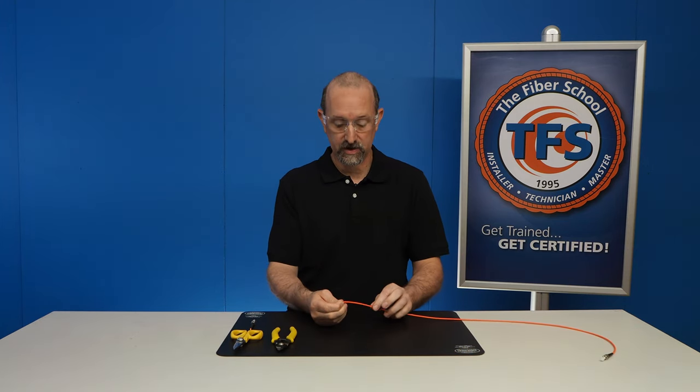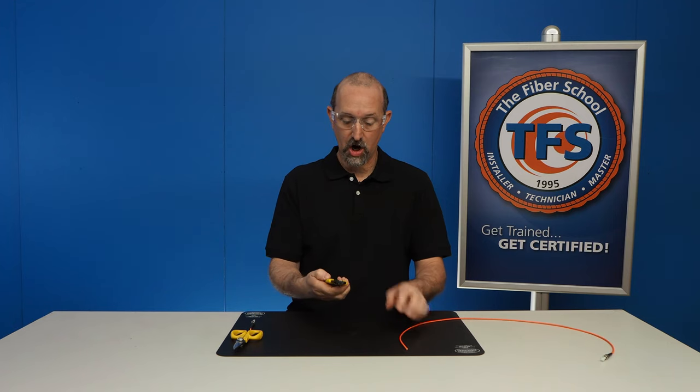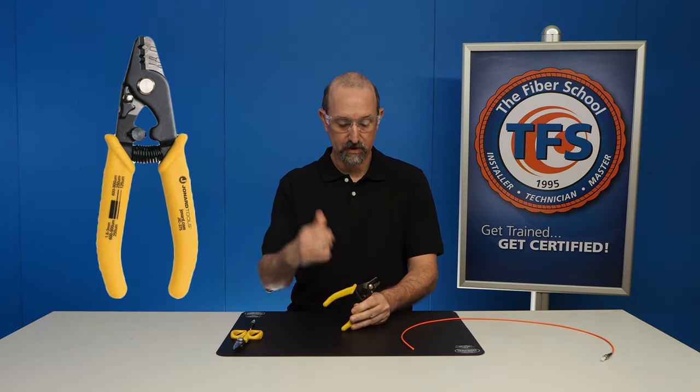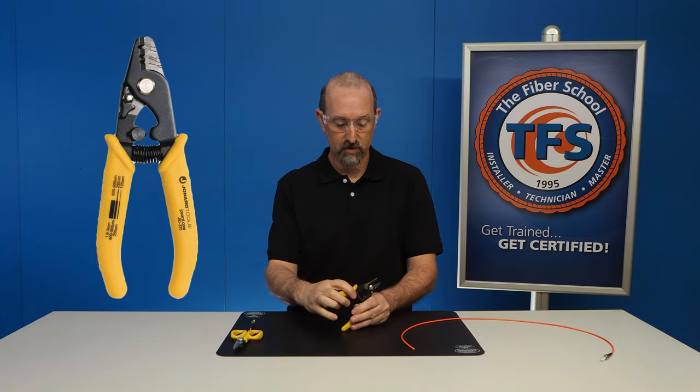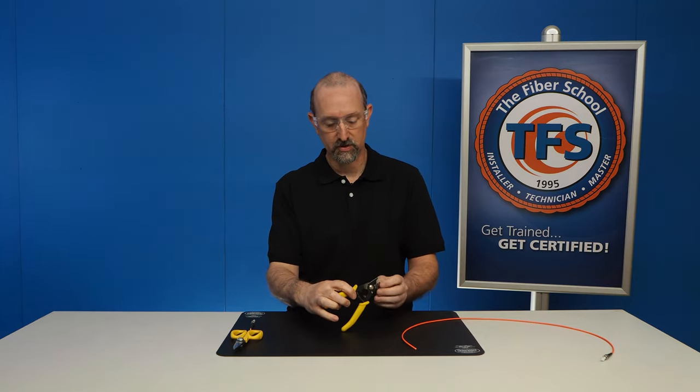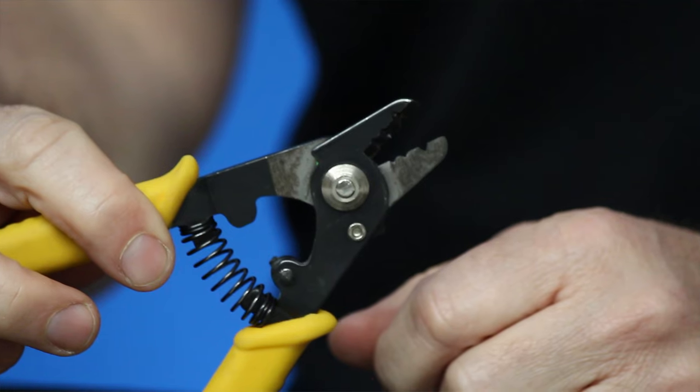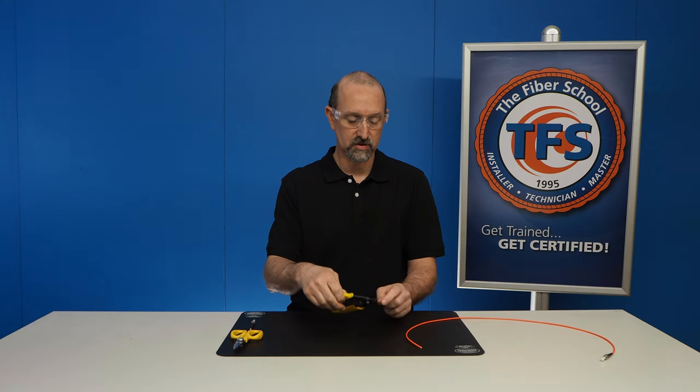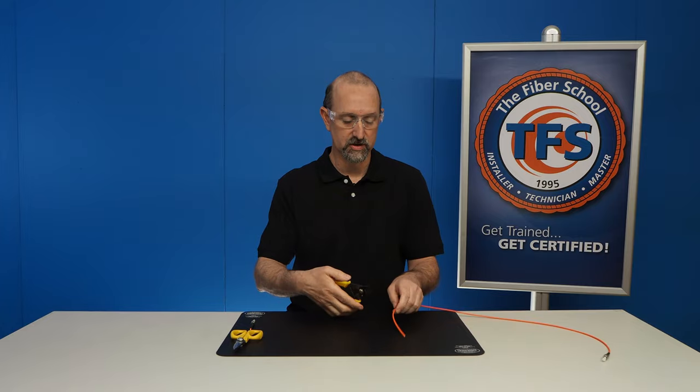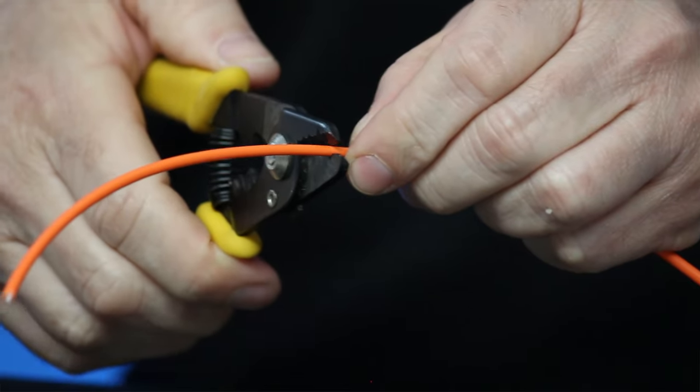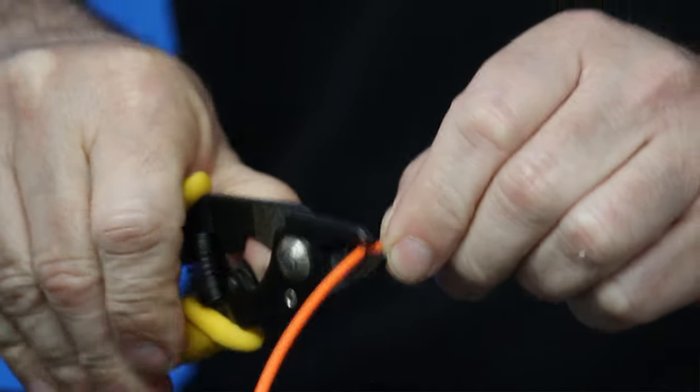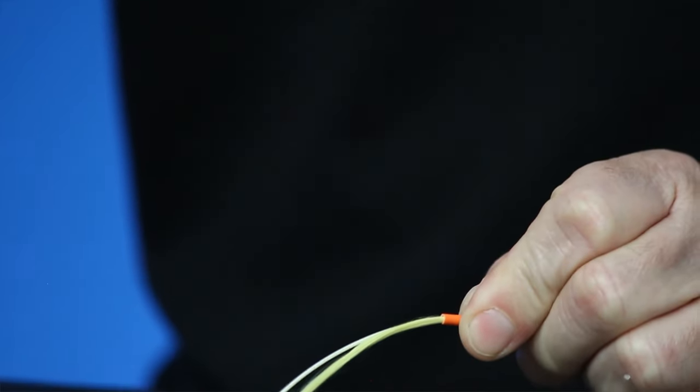So I have my cable here and I got a three millimeter outside jacket. On our three-hole stripper there's three holes here. There's probably going to be a close-up in my right-hand corner above my head to show you this because this might be kind of tough to see. But what we're going to do is use the first hole, the larger of them, and we're going to strip off the three millimeter outside jacket. Cuts like that and it pulls right off.